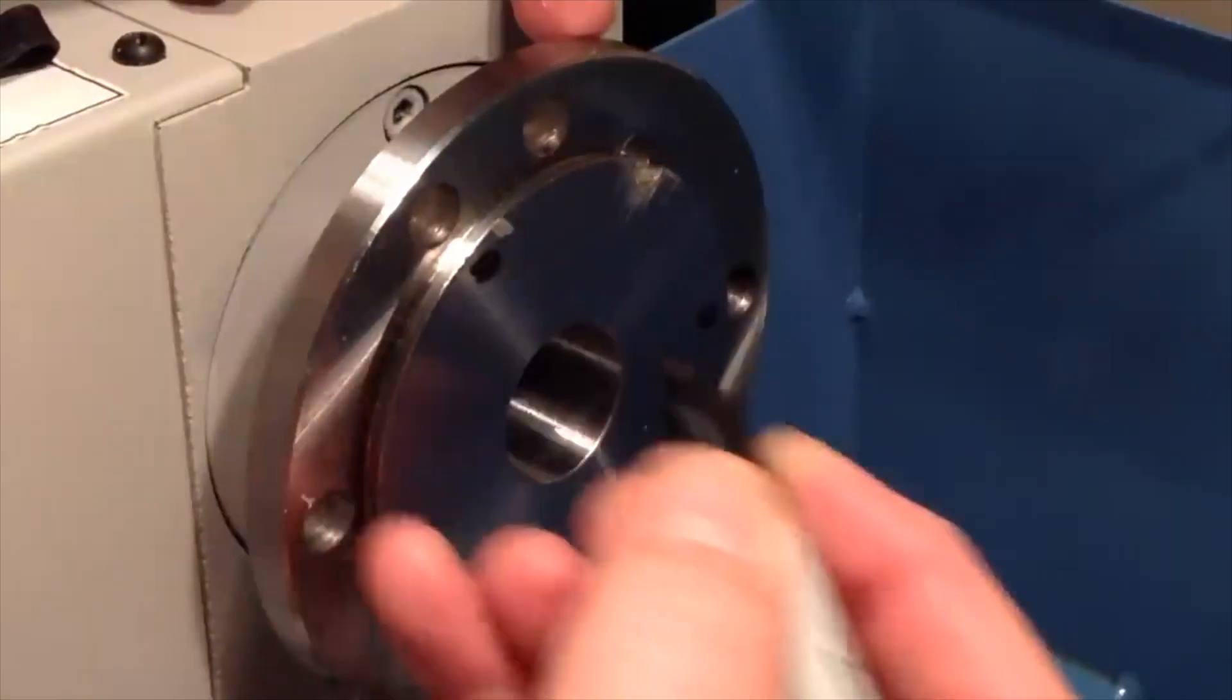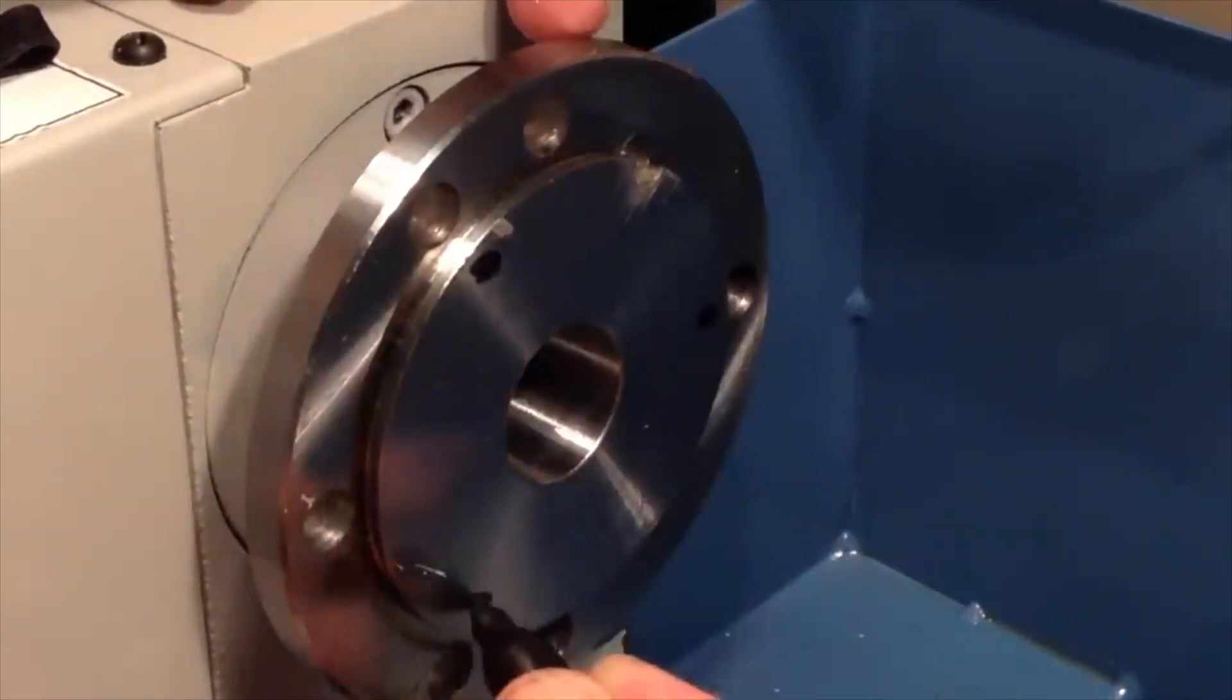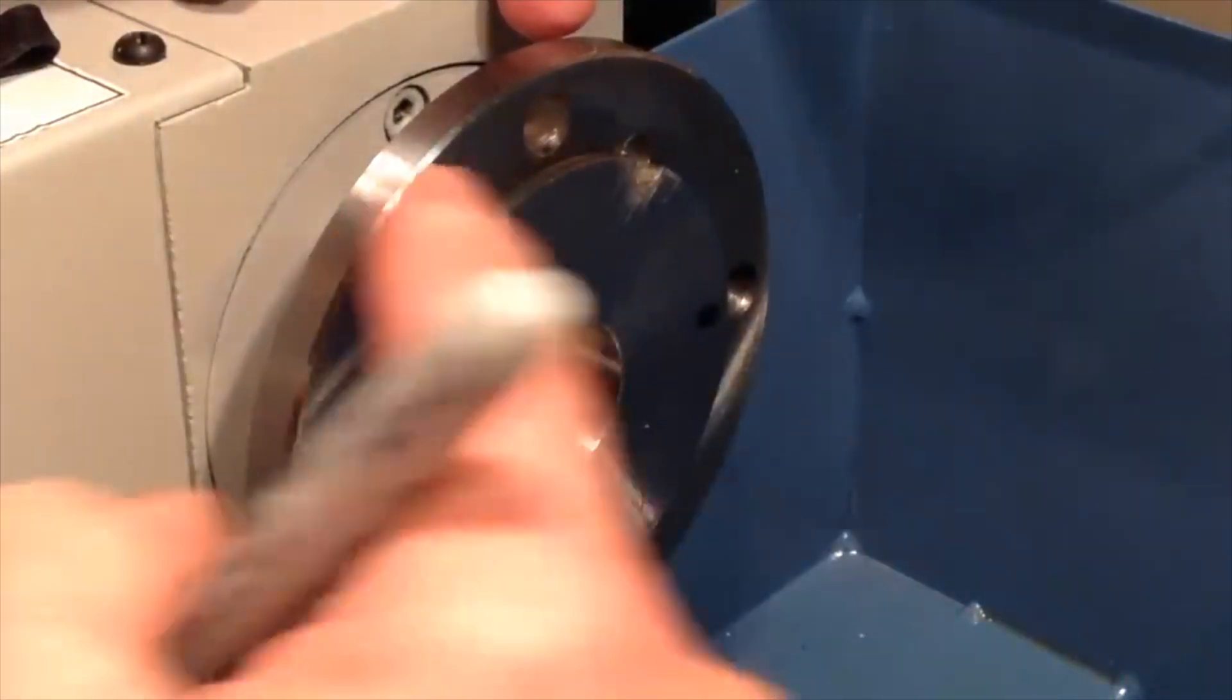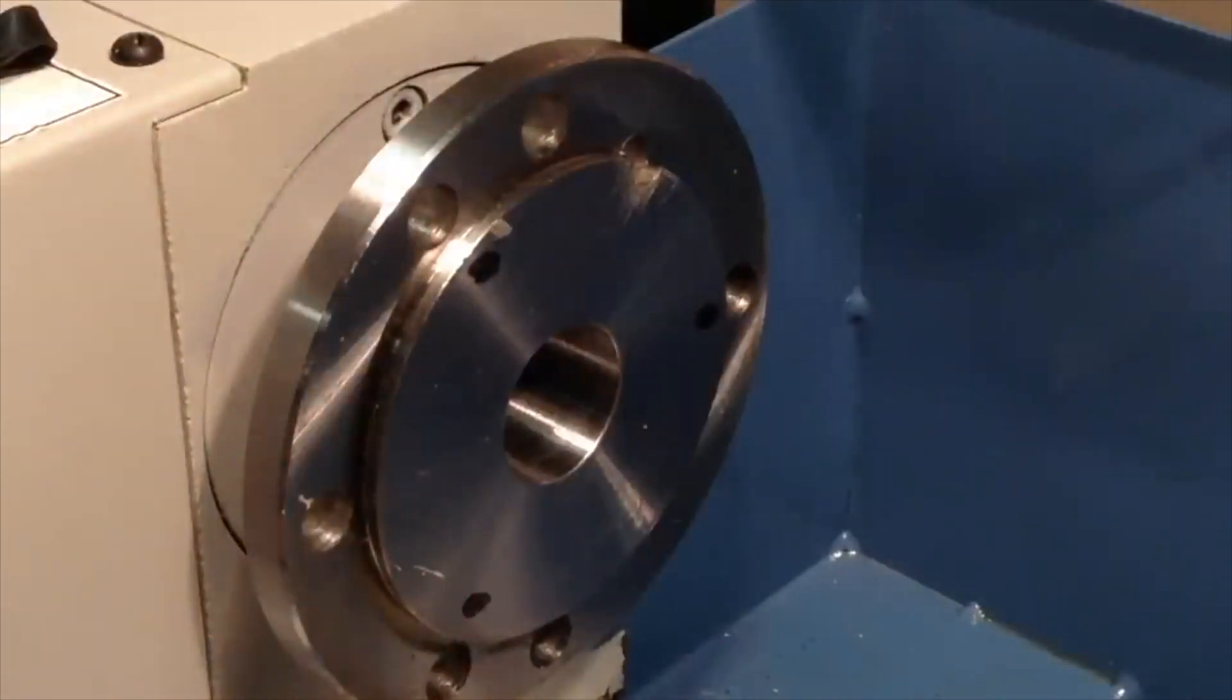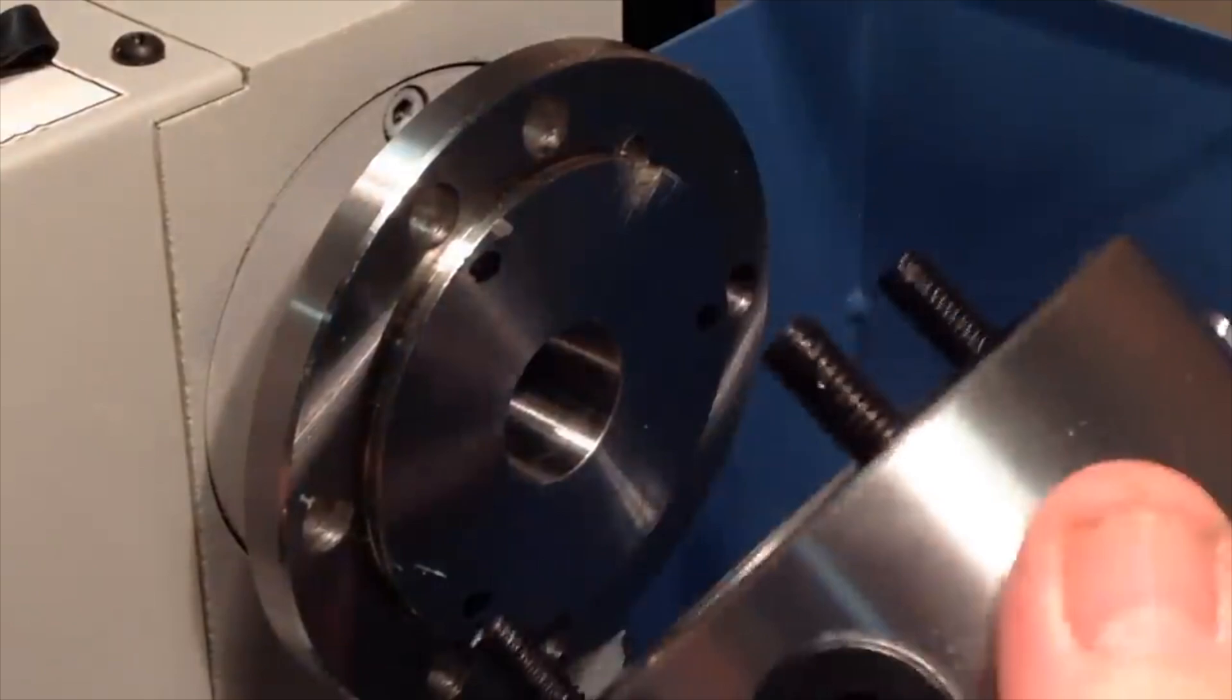One thing I like to do is take a sharpie pen or sometimes I use some nail polish and just mark the three holes for the 3 jaw chuck. That makes it easier when you go to put the chuck in place to match up these studs with the correct holes.